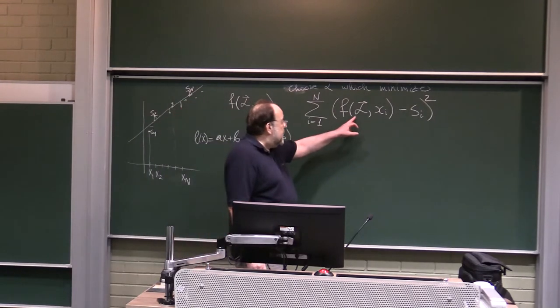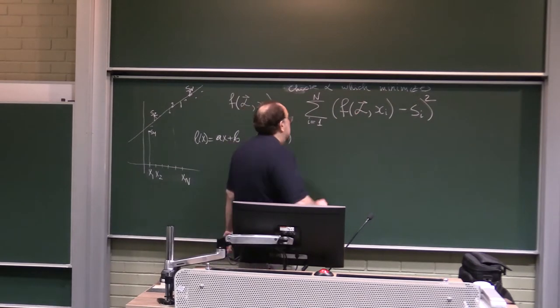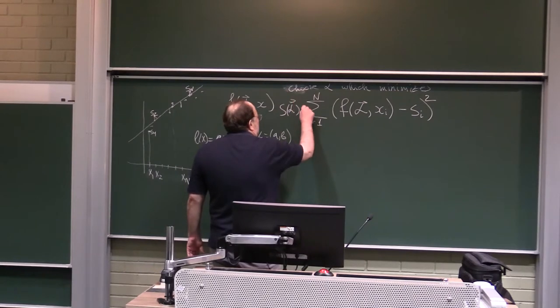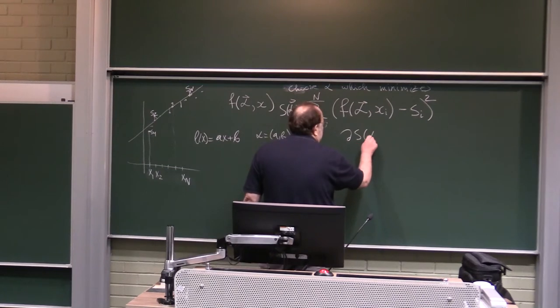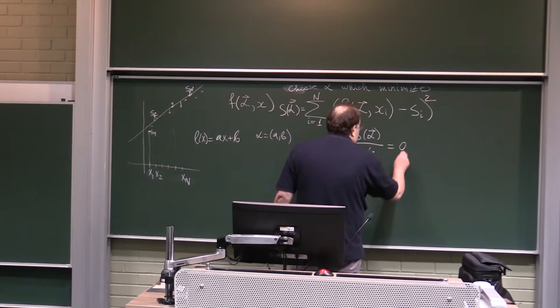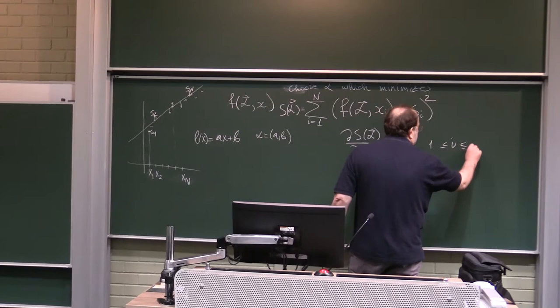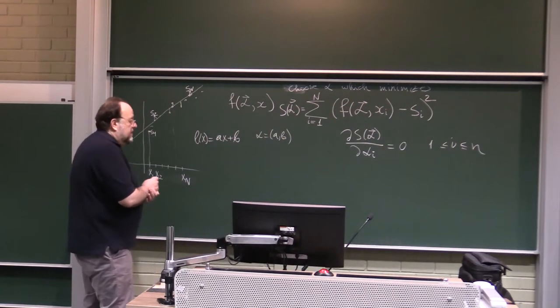In this case you would have only two variables, and of course this is minimized by finding the partial derivatives. So if s of alpha denotes the sum, then this is minimized by computing ds of alpha over d alpha_i, and setting them all equal to zero, and i goes between one and the number of parameters, say n, the length of vector x.